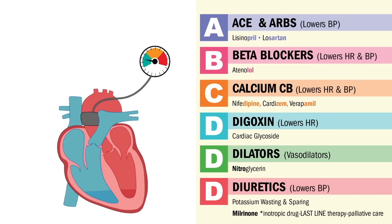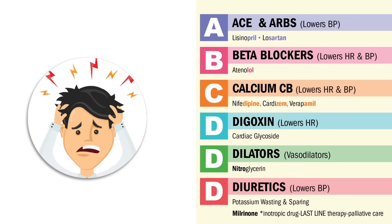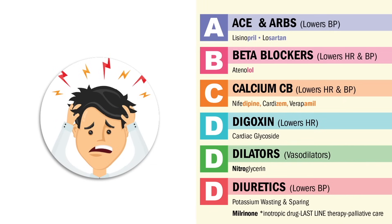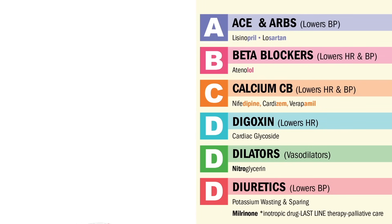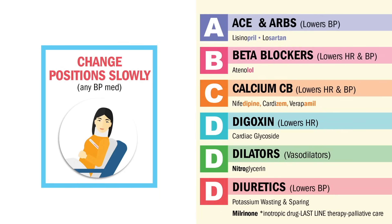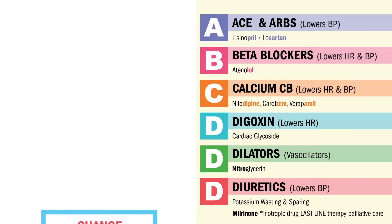The big NCLEX tip here is everyone can cause orthostatic hypotension — low blood pressure and dizziness when standing — everyone except digoxin, since it does not affect the blood pressure. So we teach NCLEX key terms here: slow position changes. When blood pressure is low, we gotta go slow. Big on the NCLEX — they will try and trick you.